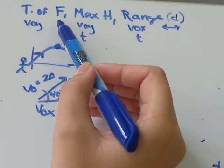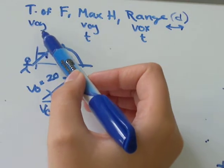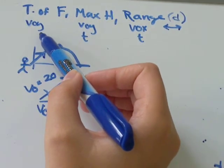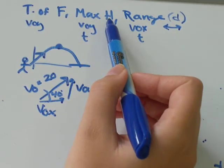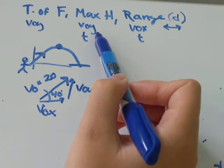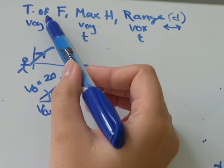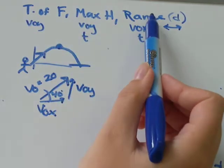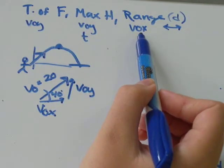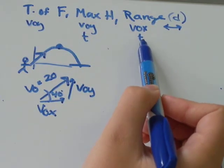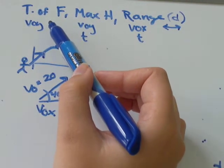To be able to solve for time of flight, you need the y component of the initial vector. For maximum height, you need the y component of the initial vector and the time, which you find in time of flight. And for the range, you need the x component of the initial velocity vector and the time, the same time that you found for time of flight.